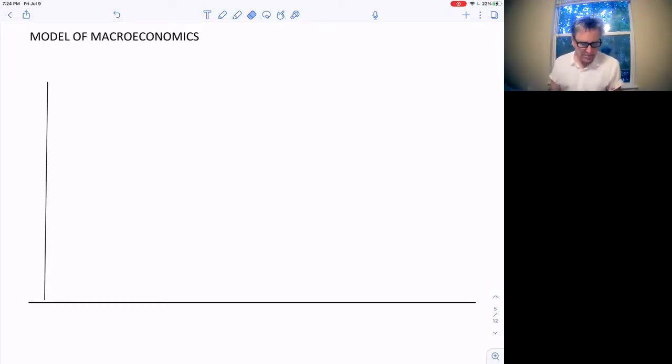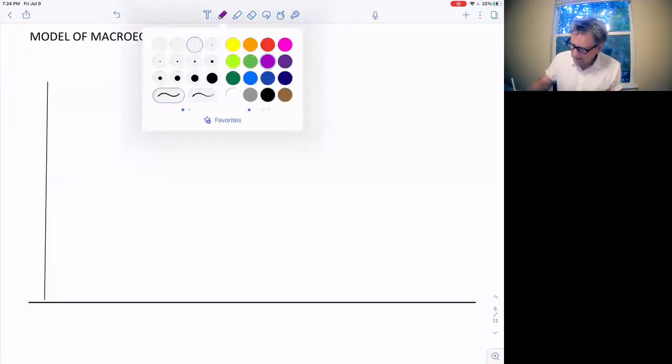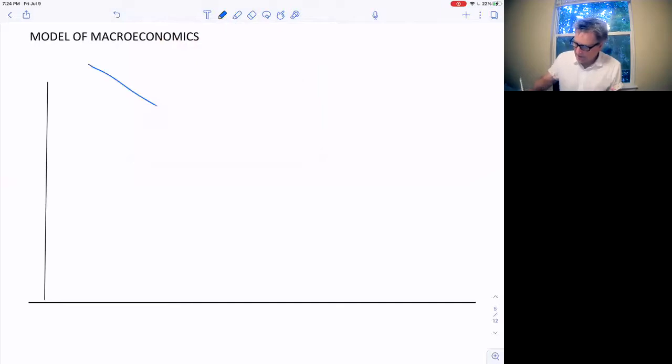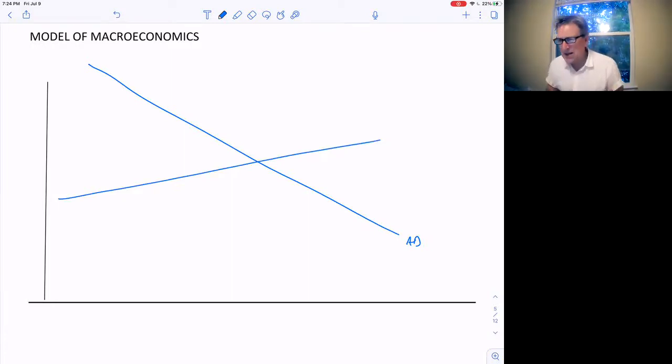So in our model, we're going to have a downward sloping aggregate demand curve. This is the demand for all goods and services. And an upward sloping aggregate supply curve. Maybe kind of flat, maybe upward sloping a little bit, but not vertical. So this will be aggregate supply.